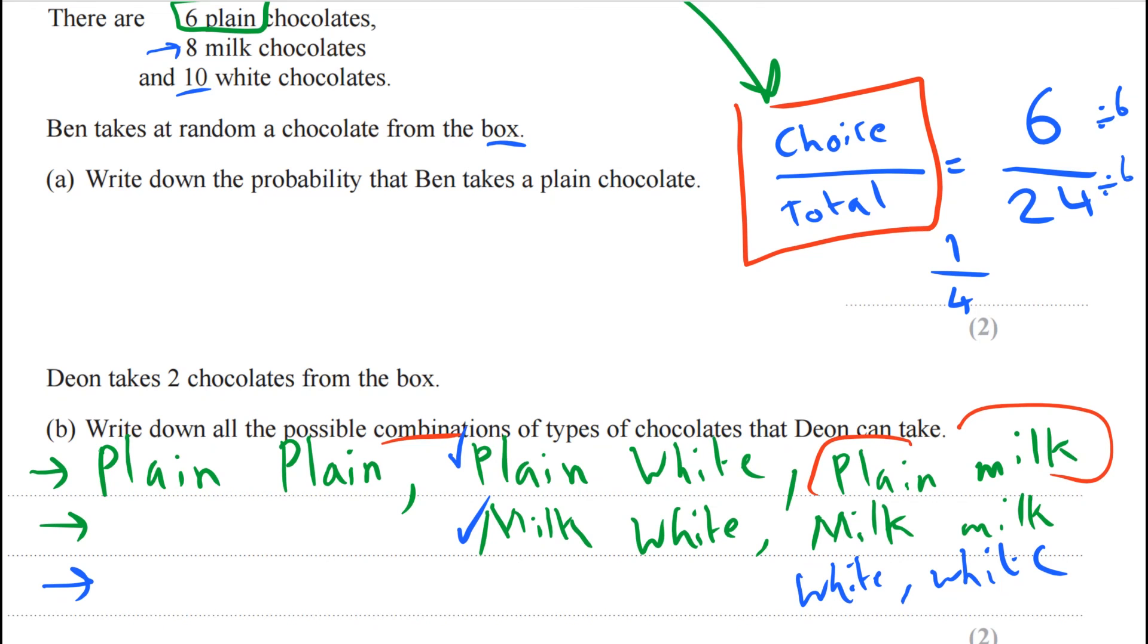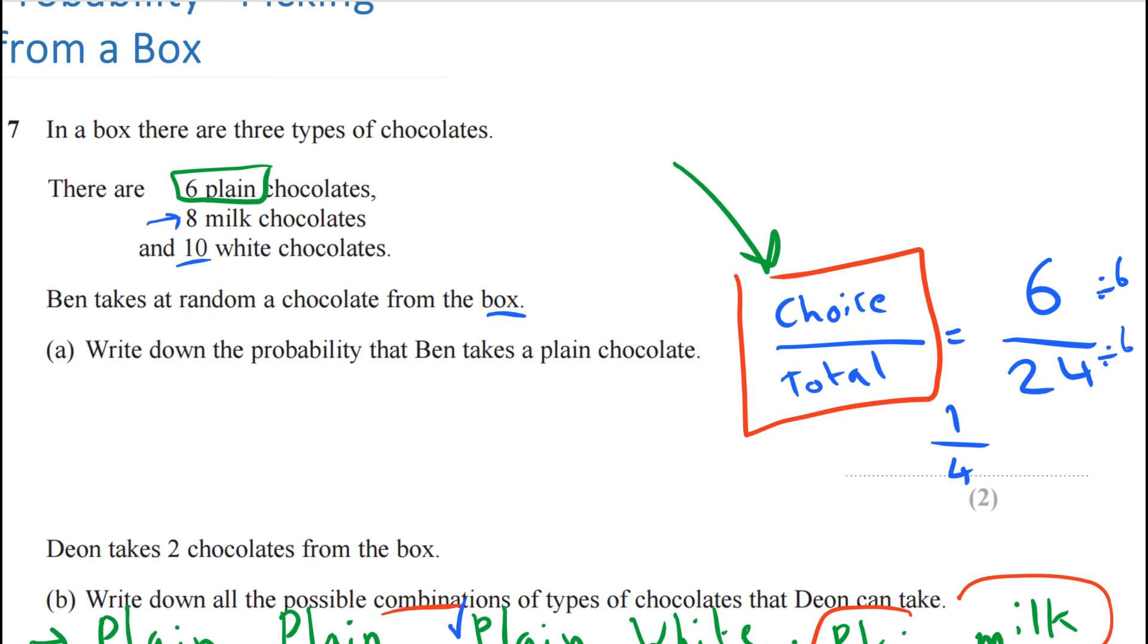The key lesson to take from today is about probabilities, and that is to do the choice divided by the total.